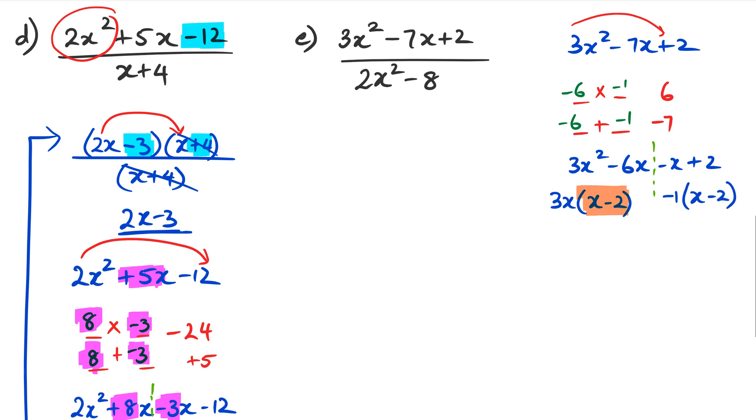And then here I've got negative 1 as a common factor, which means I can rewrite this as X minus 2. Now I can see that X minus 2 and X minus 2 are common factors. So I can rewrite this as 3X minus 1 multiplied by X minus 2. So just kind of reaffirming that 3X is actually from there. The negative 1 is from there.